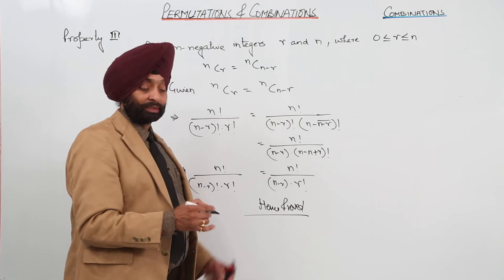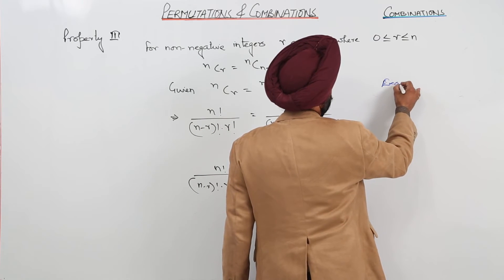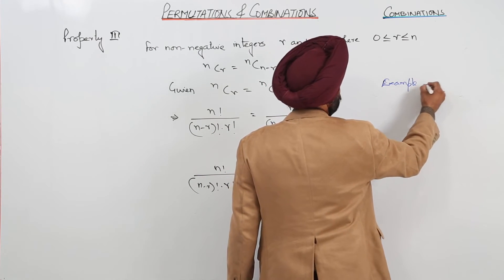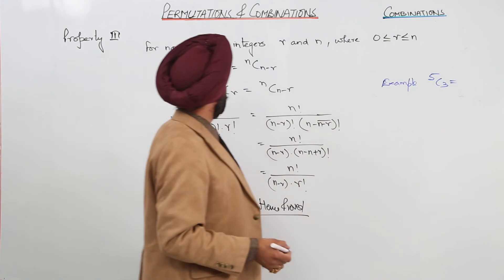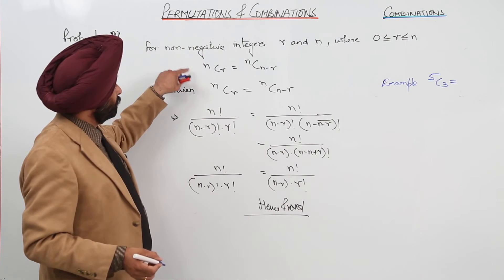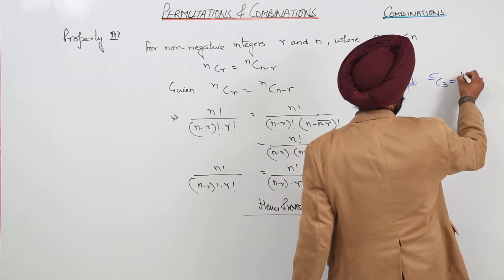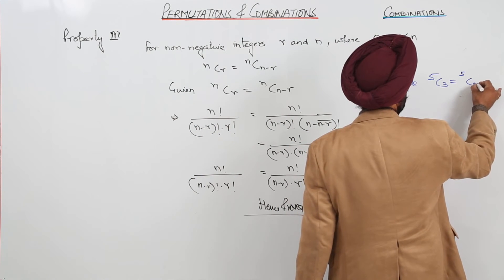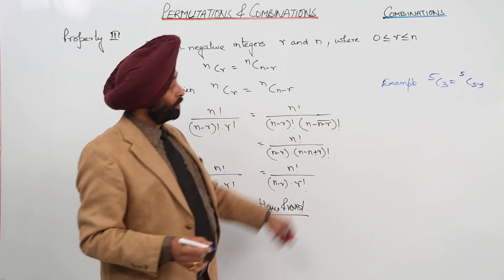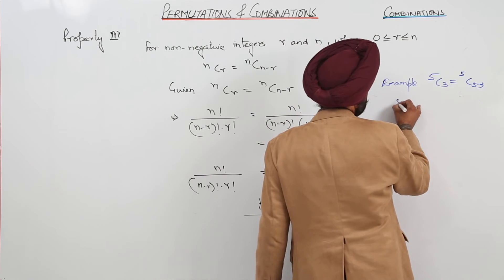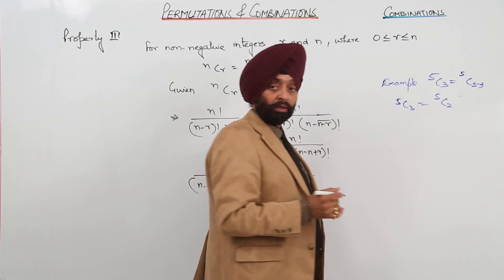Now we can go for an example. Suppose we are having 5C3, and according to this property, 5C3 should be equal to 5C(5 minus 3). According to the property it should be n minus r. r we have taken 3, so 5C3 can be equal to 5C2.